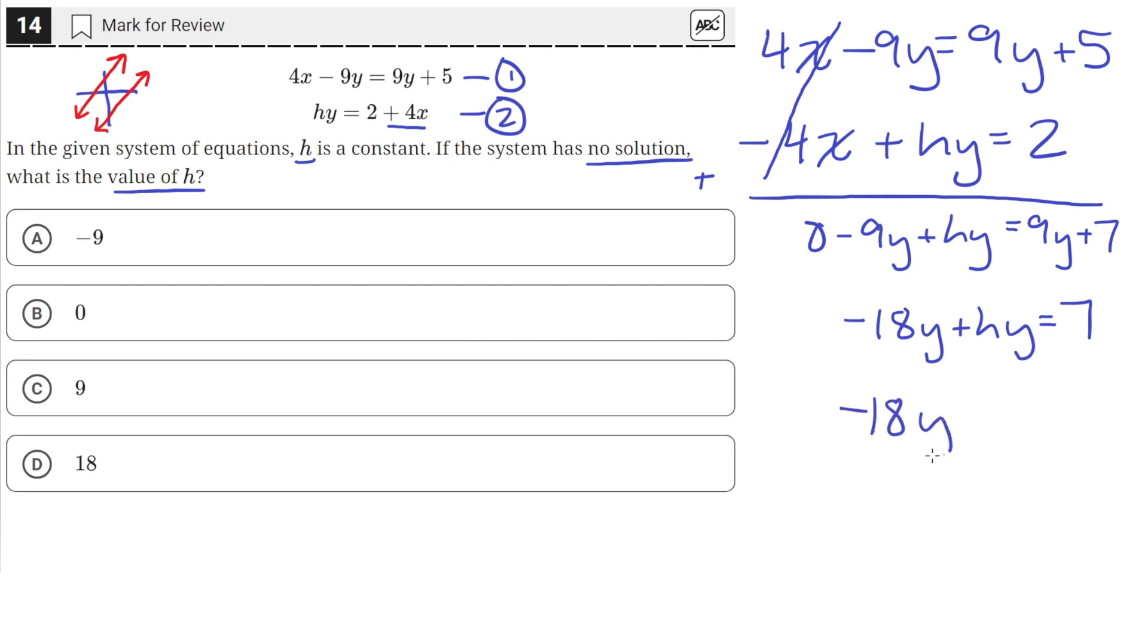Because if we set h equal to 18, we'll get that negative 18y plus 18y is equal to 7. But these two cancel out. So the equation will result in 0 equals 7.